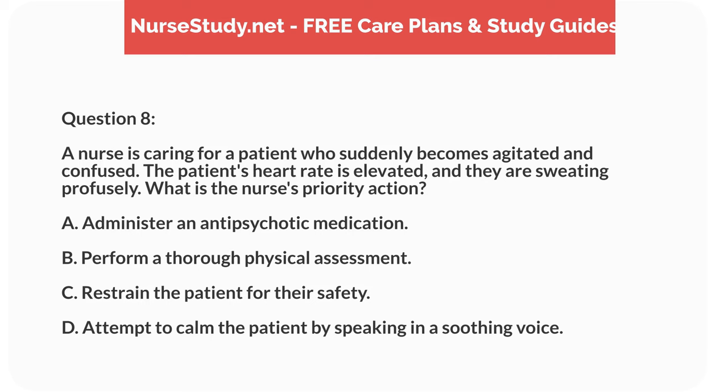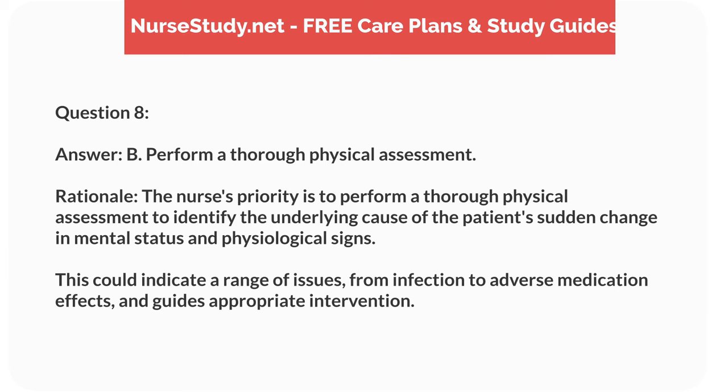Question 8. A nurse is caring for a patient who suddenly becomes agitated and confused. The patient's heart rate is elevated, and they are sweating profusely. What is the nurse's priority action? A. Administer an antipsychotic medication. D. Attempt to calm the patient by speaking in a soothing voice. Answer: B. Perform a thorough physical assessment. Rationale: The nurse's priority is to perform a thorough physical assessment to identify the underlying cause of the patient's sudden change in mental status and physiological signs. This could indicate a range of issues, from infection to adverse medication effects, and guides appropriate intervention.